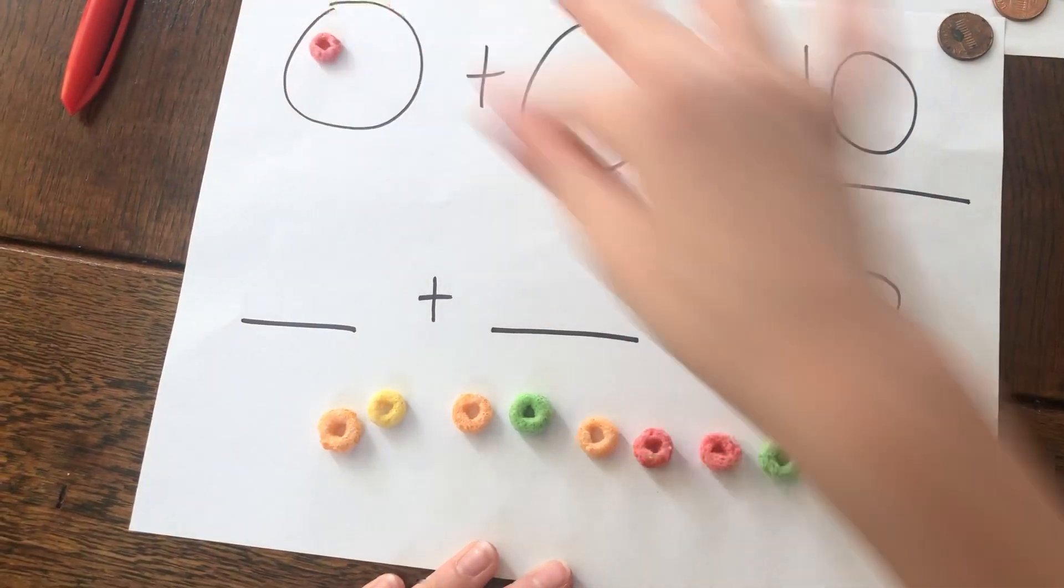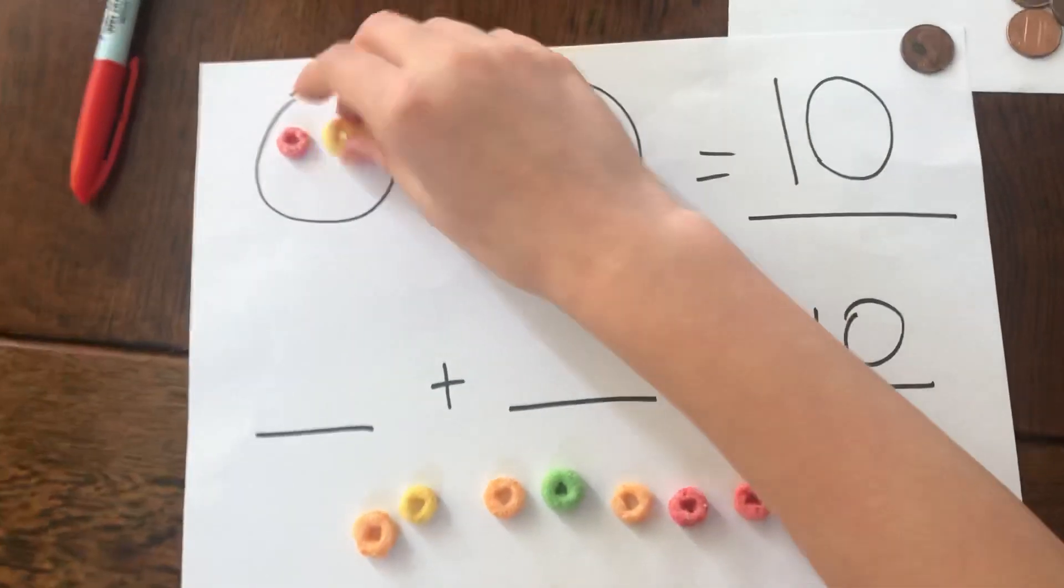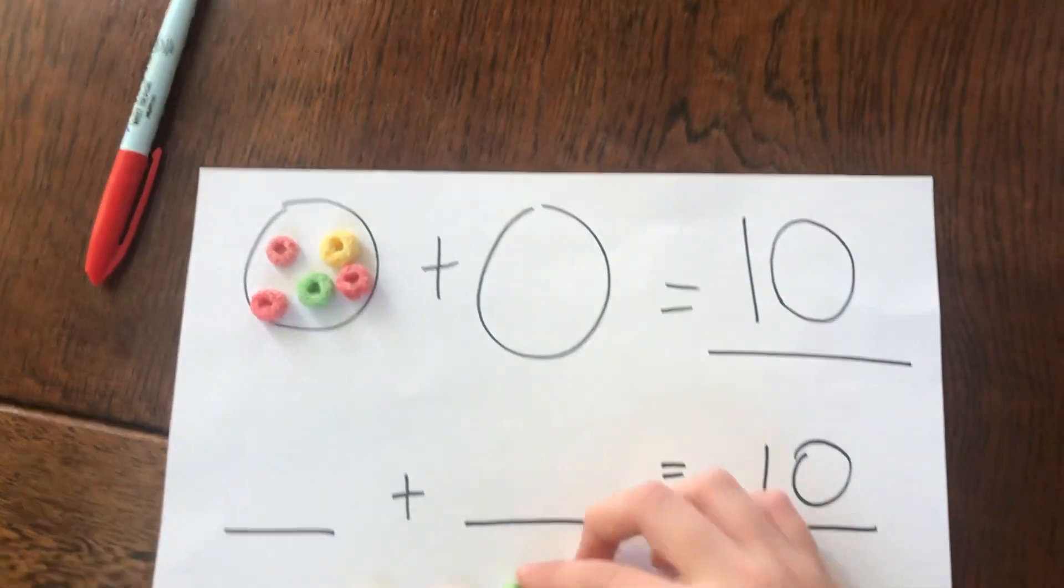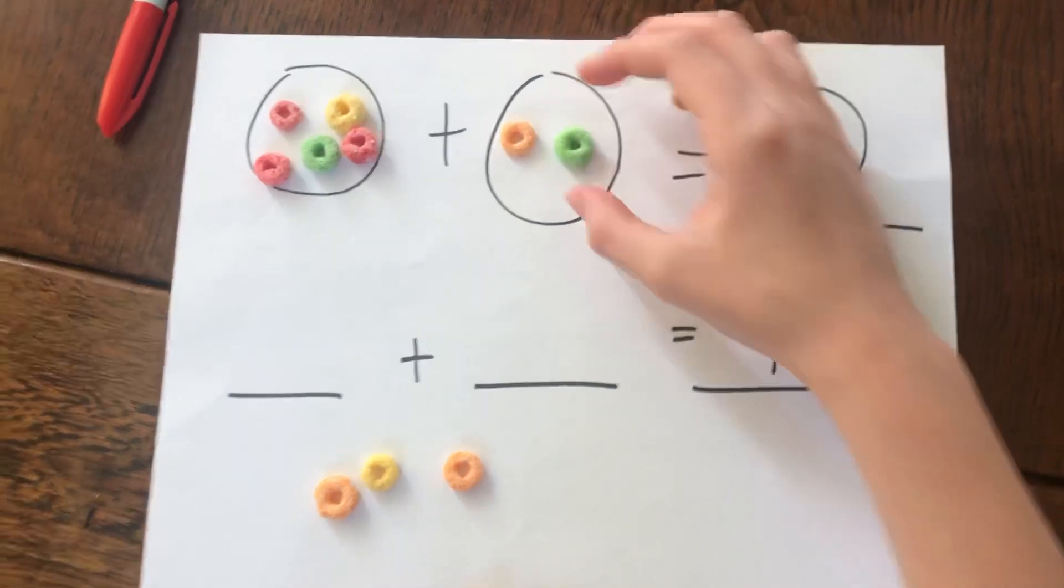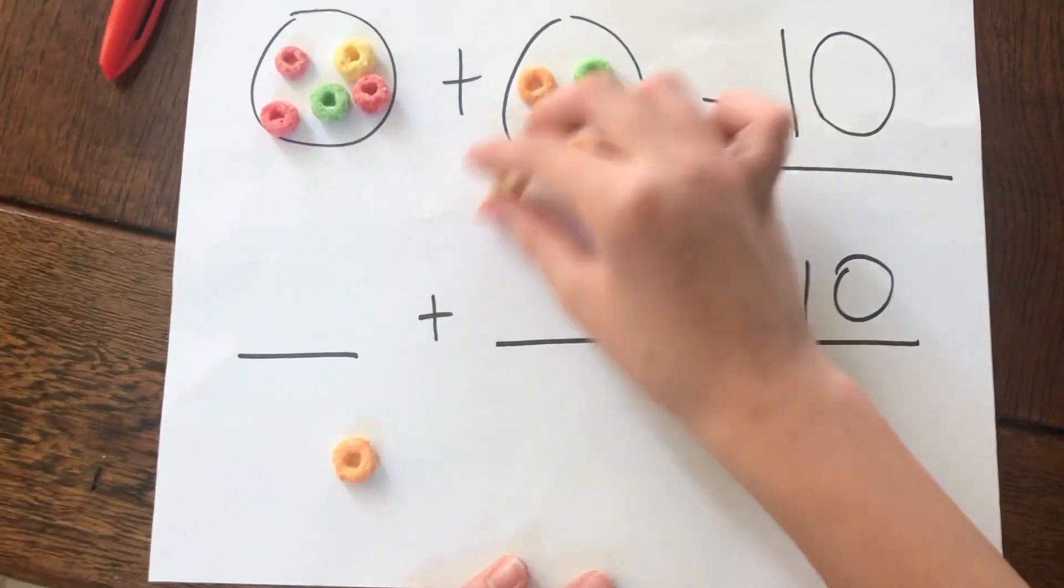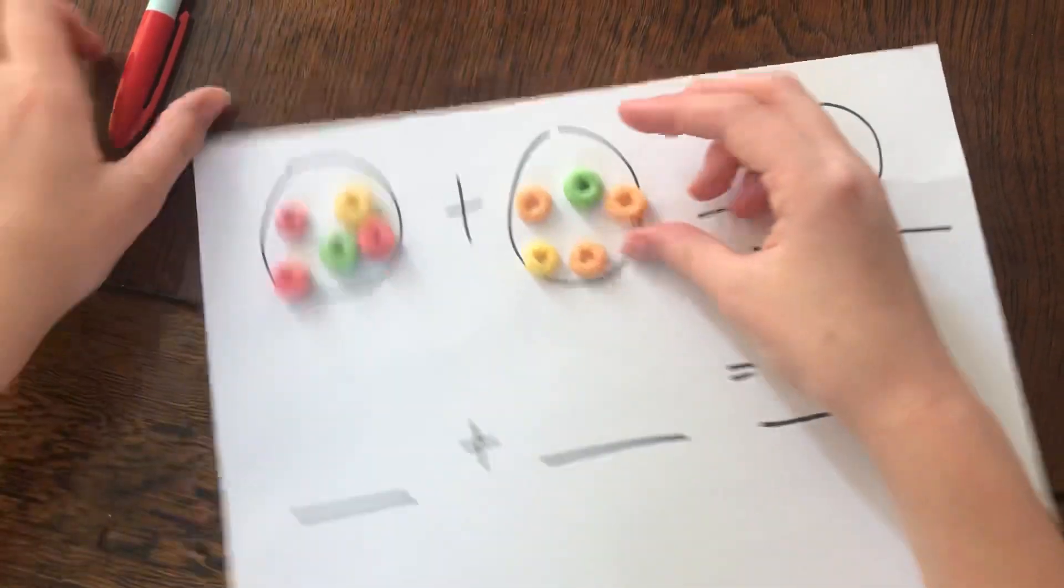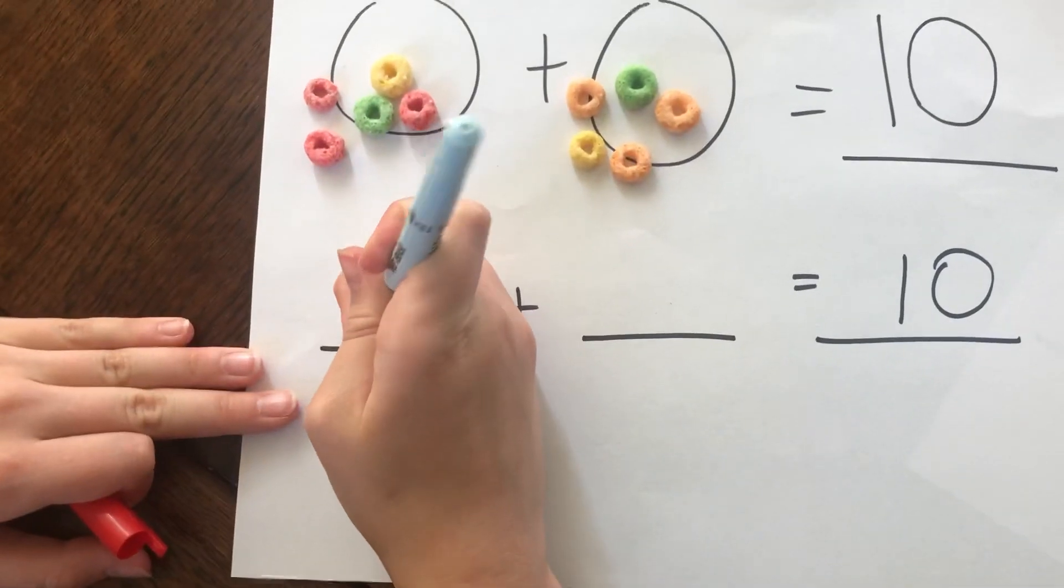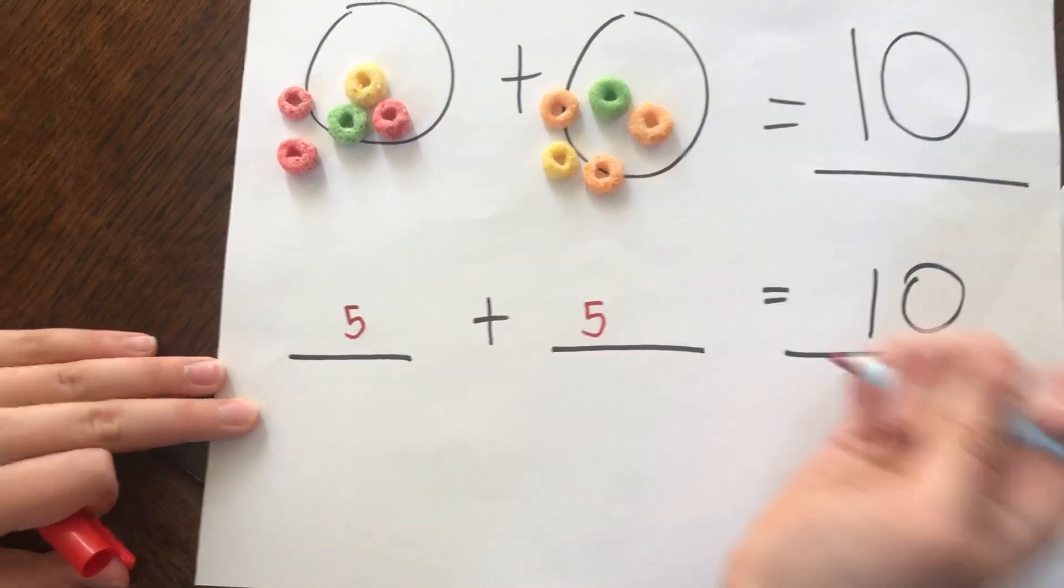So I'm going to put one, two, three, four, five in this circle. And one, two, three, four, five in this circle. And down here, I'm going to write five plus five equals ten.